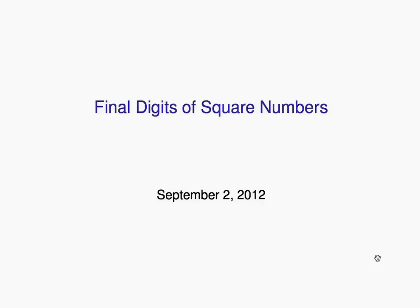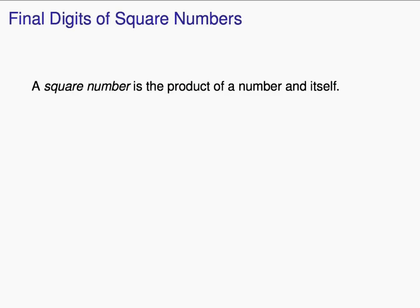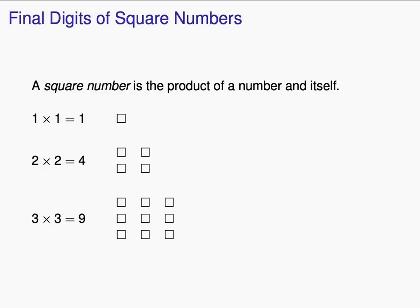Today we're going to study the final digits of square numbers. A square number is the product of a number in itself. The first square number is 1 times 1, which is 1. The second square number is 2 times 2, which is 4. The third square number is 3 times 3, which is 9.